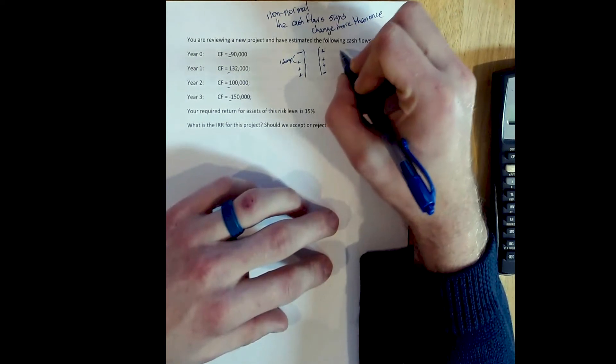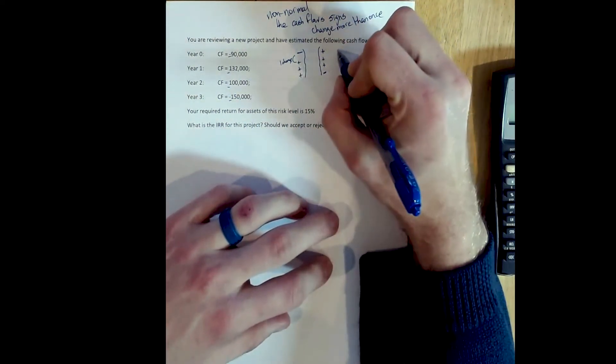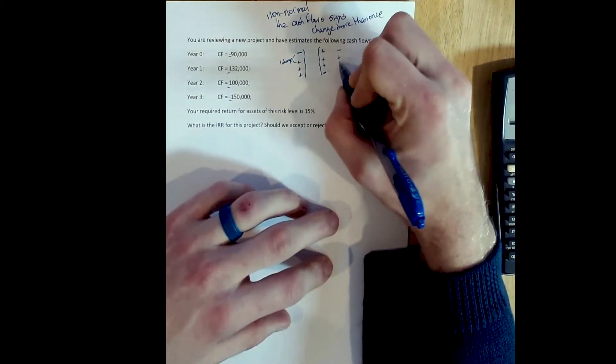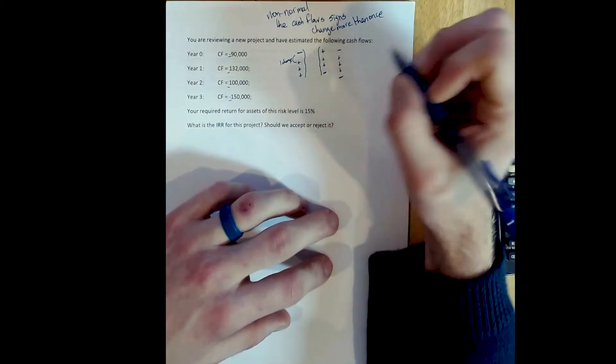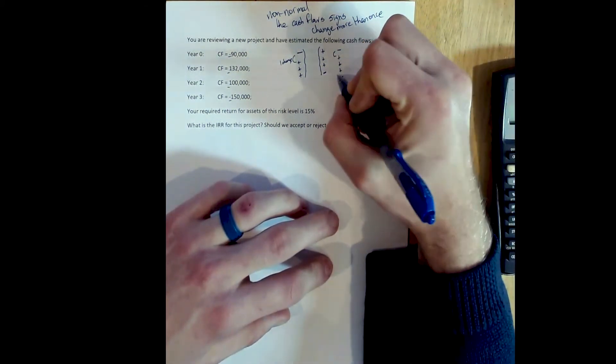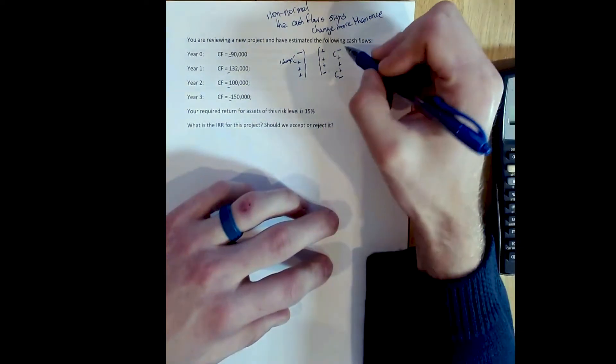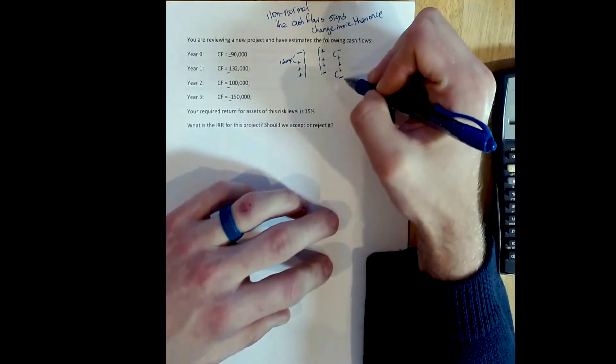Non-normal cash flows would require, like what we see here, say, a negative cost, a series of positive cash flows, and then another negative cost. Notice here we have two sign changes, from negative to positive, and from positive to negative.